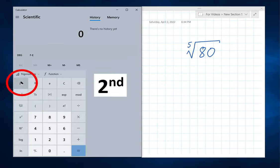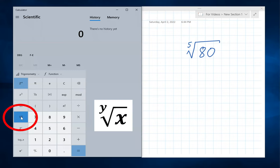But there's a second key here. It tells us there's a second set of buttons. Click on that. Most buttons are the same but there are some new ones here. And one of them is the yth root of x. That's the one we want.